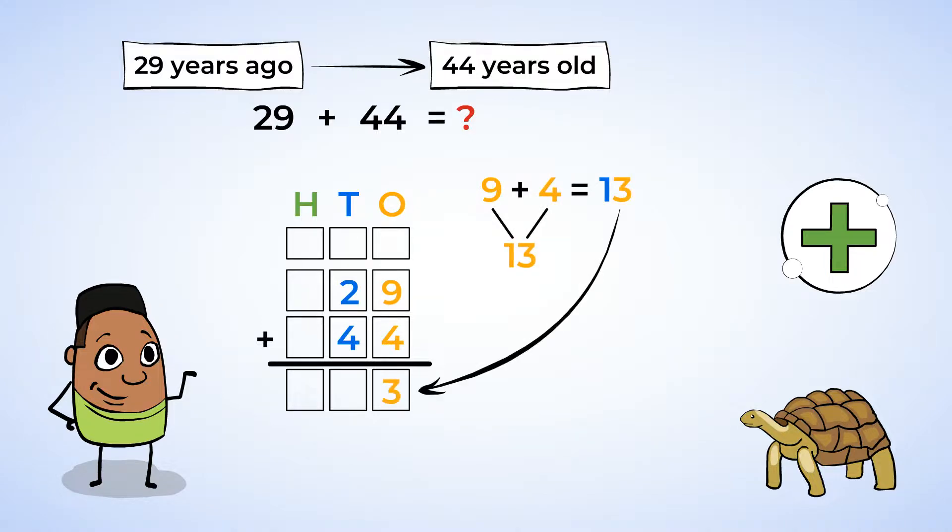So, first keep the 3 from the ones place. Then put the extra 10 in the tens place to be added with the rest of the numbers in the tens place. Now you can add the tens up. 1 plus 2 is 3, and 3 plus 4 is 7.